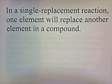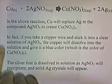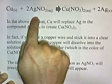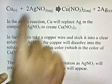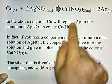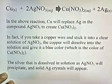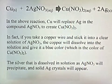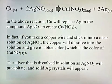In a single replacement reaction, one element will replace another element in a compound. Here's a reaction: solid copper put into a silver nitrate solution. This solid stuff is dissolved in water, and the outcome is that copper nitrate will be dissolved in solution and solid silver will be produced. So copper will replace silver in the compound AgNO3 to create CuNO3.